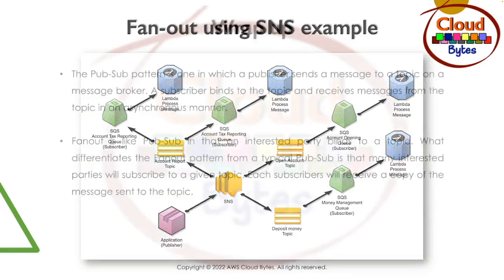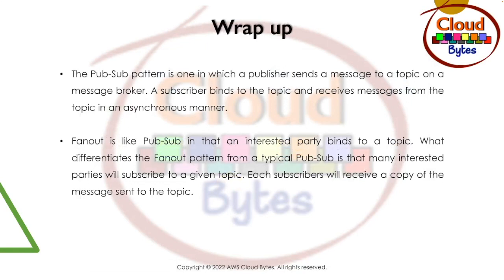Let's do a wrap-up. There are two things, both of them are publisher-subscriber models. In the pubsub pattern, the publisher sends a message to a topic on a message broker, and the subscriber binds to the topic and receives the message asynchronously. There is no waiting, no dependency as such. It is a good, scalable way to have no dependencies between sub-components of your architecture. Fanout is like pubsub, but the interesting difference is that there can be more than one subscriber to a given topic. Each subscriber will receive a copy of the message sent to the topic.